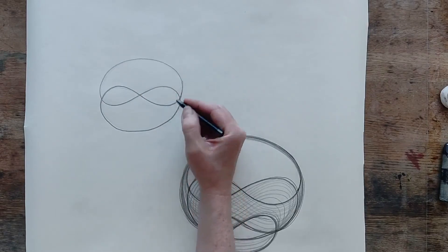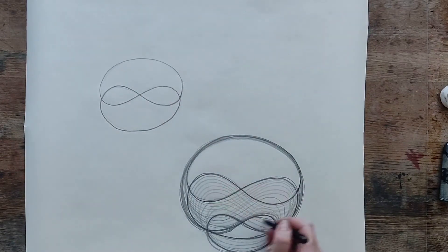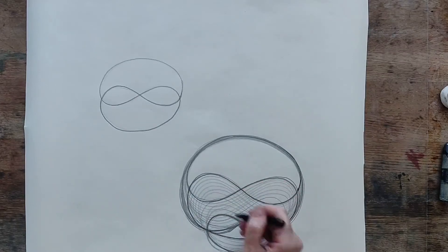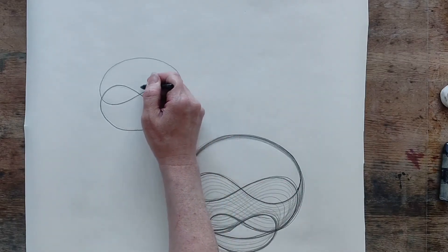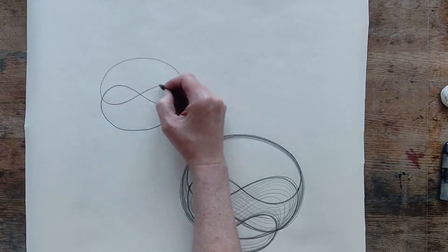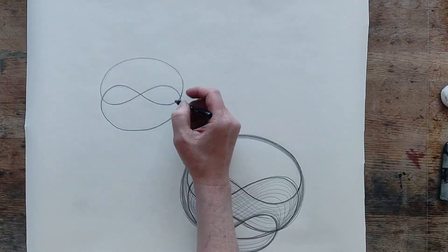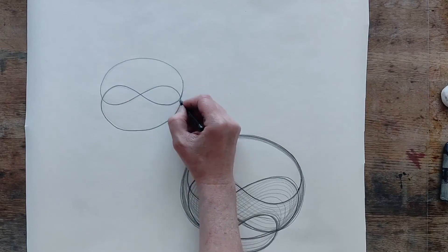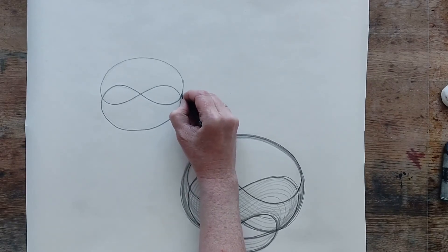And then what you want to do is now instead, before we worked in the bottom part, now what we want to do is we want to maintain these lines here. So the bottom part of the form we want to maintain and only work with the top line, well, transform the top line.